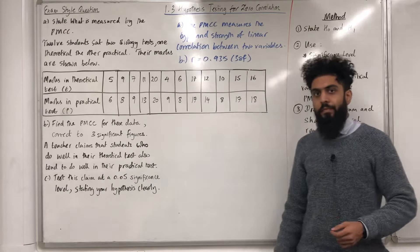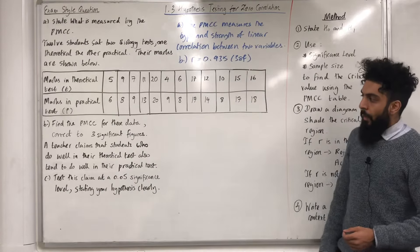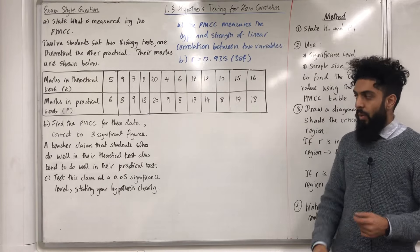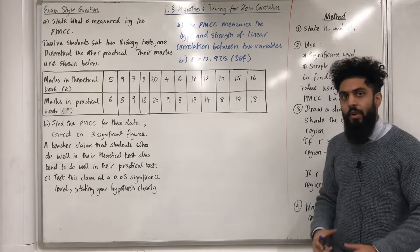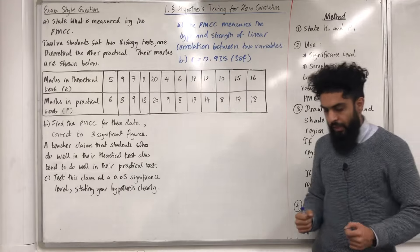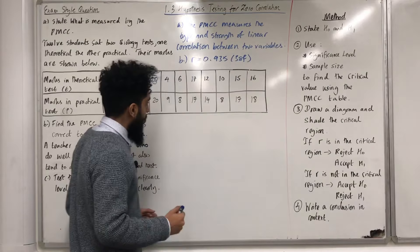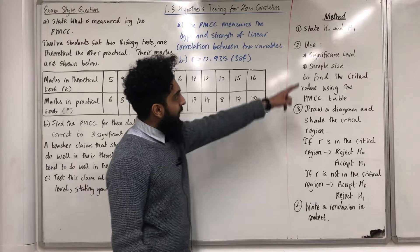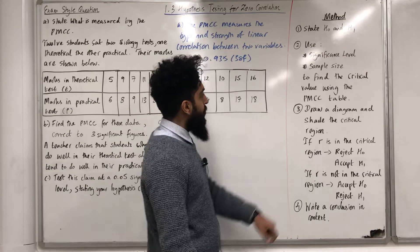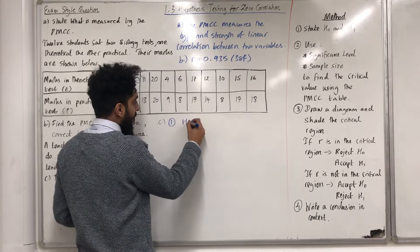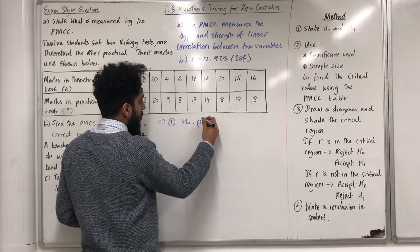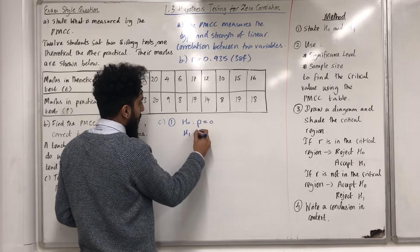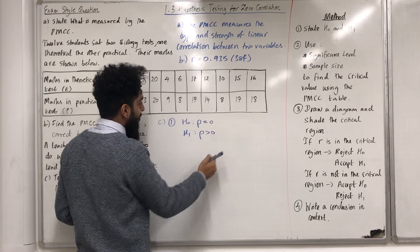Let's move on to part C. For part C, we want to carry out a one-tail test to test the claim that there is a positive correlation. Step 1: state H0 and H1. H0 represents rho is equal to 0, and H1 represents rho is greater than 0. These are the hypotheses for a positive correlation.